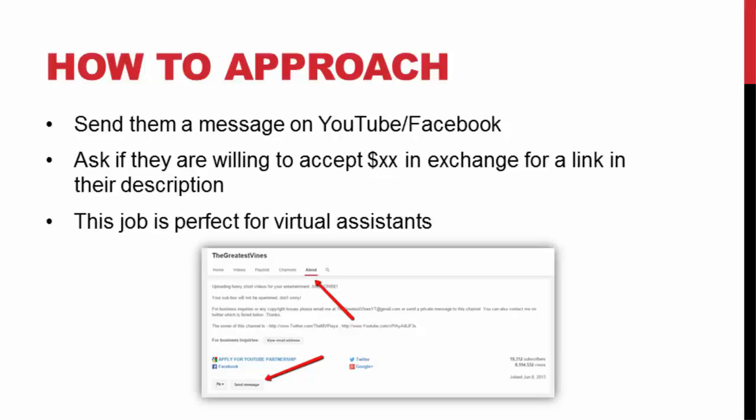You can offer an amount on a monthly basis — 20 bucks a month to keep their link in the description — or yearly, or maybe forever. Just discuss and negotiate with the video creator until you meet at an agreement. This is also perfect to outsource to a virtual assistant — have them go out and find these videos and reach out to these people so you can get your website link spread out across niche related videos without actually having to do any work.